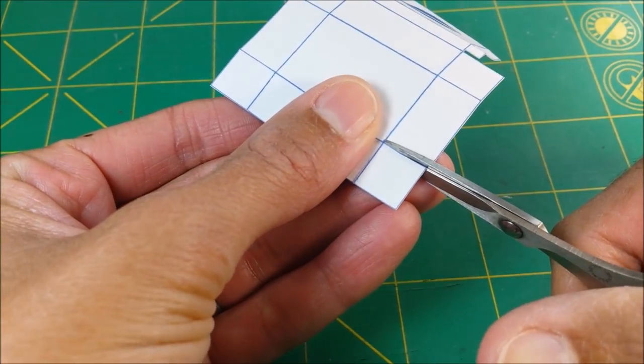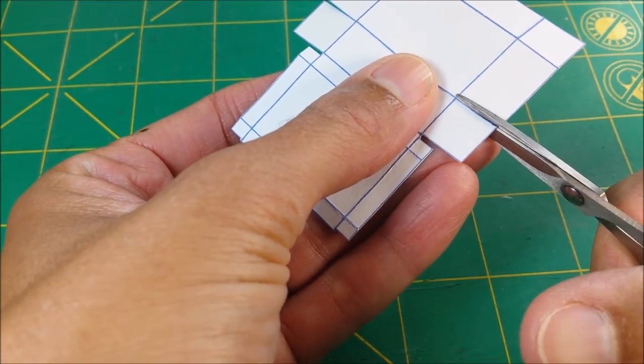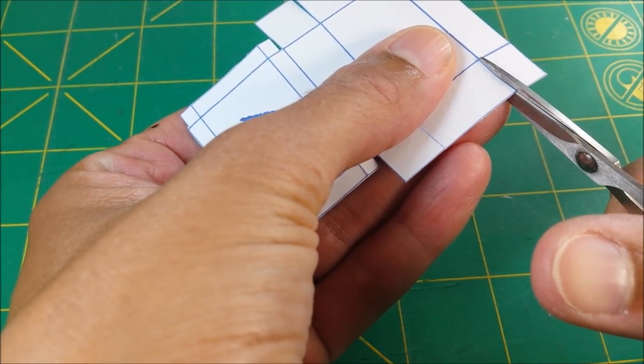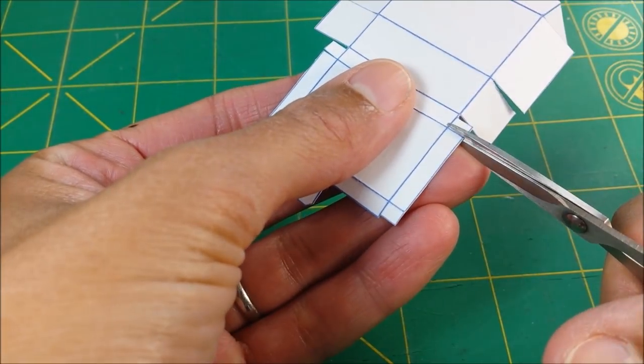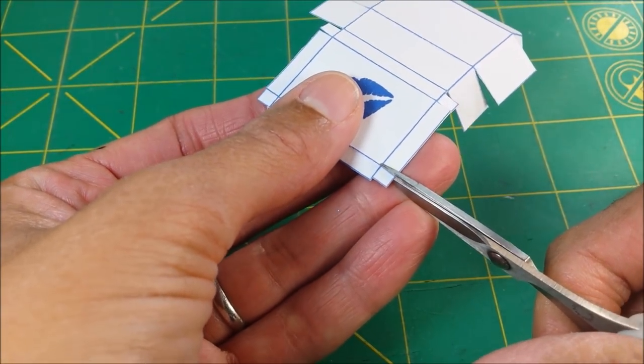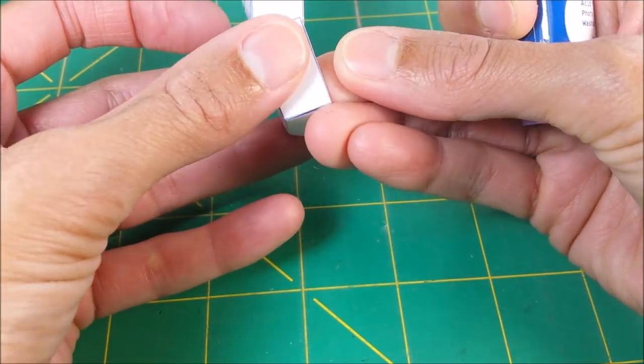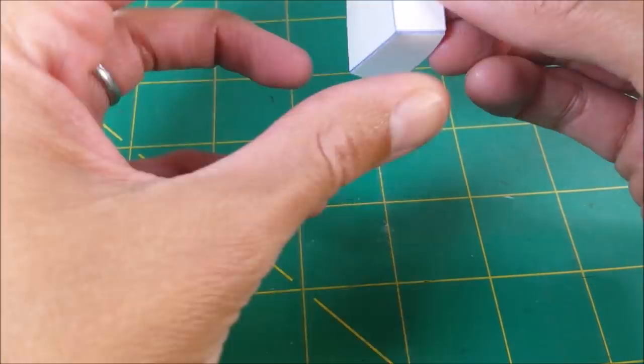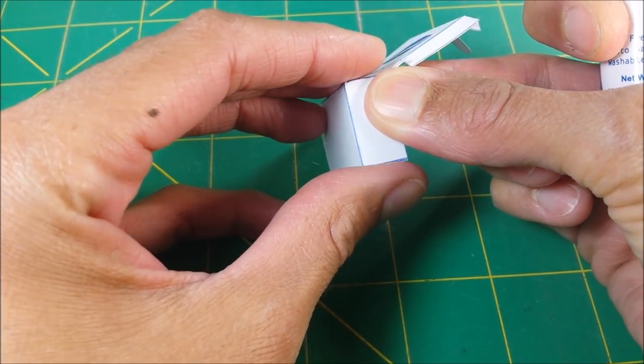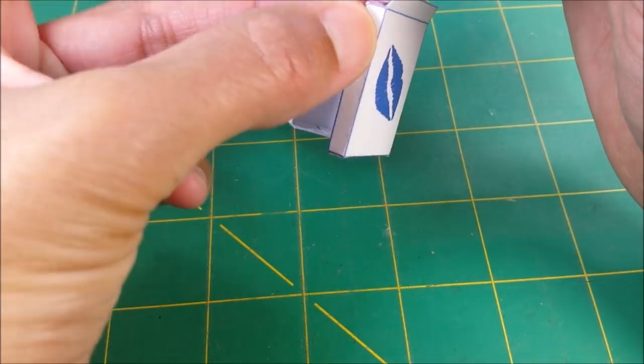Next I cut out my tabs along the bottom and along my top section, and I'm just gluing my tabs on the inside, and doing the same thing with my tiny little tabs along the top.